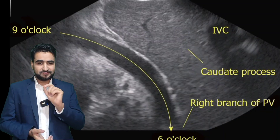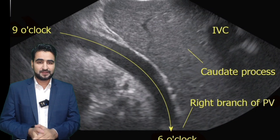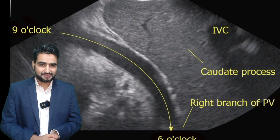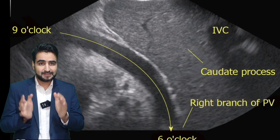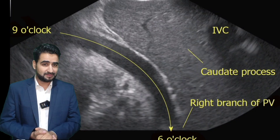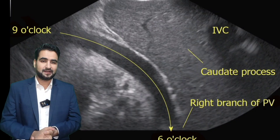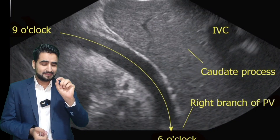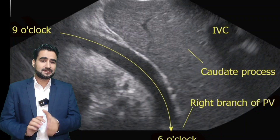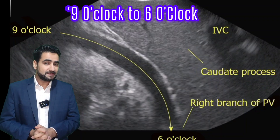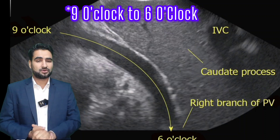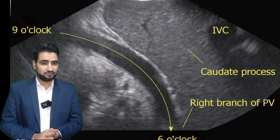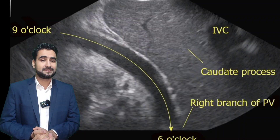Finally, in this image, we visualize the right branch of the portal vein. A slight upward angulation of the scope is often necessary. The caudate process of the liver is a key landmark — the right portal branch typically runs just beneath it — and the inferior vena cava is again visible posteriorly. The classic sign here is the direction of flow: the right branch of the portal vein typically courses from the 6 o'clock position towards 9 o'clock on the ultrasound screen. This view is particularly helpful when evaluating right lobe pathology or planning segmental interventions.